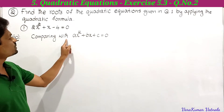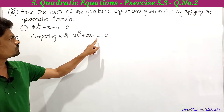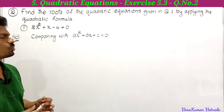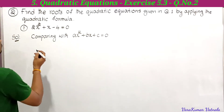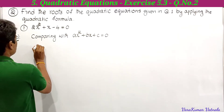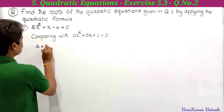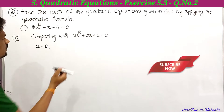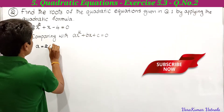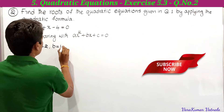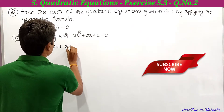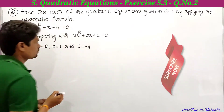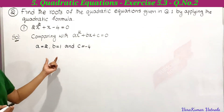Comparing the given equation with ax² + bx + c = 0: the x² coefficient is 2, so a = 2; the x coefficient is 1, so b = 1; and the constant is −4, so c = −4.